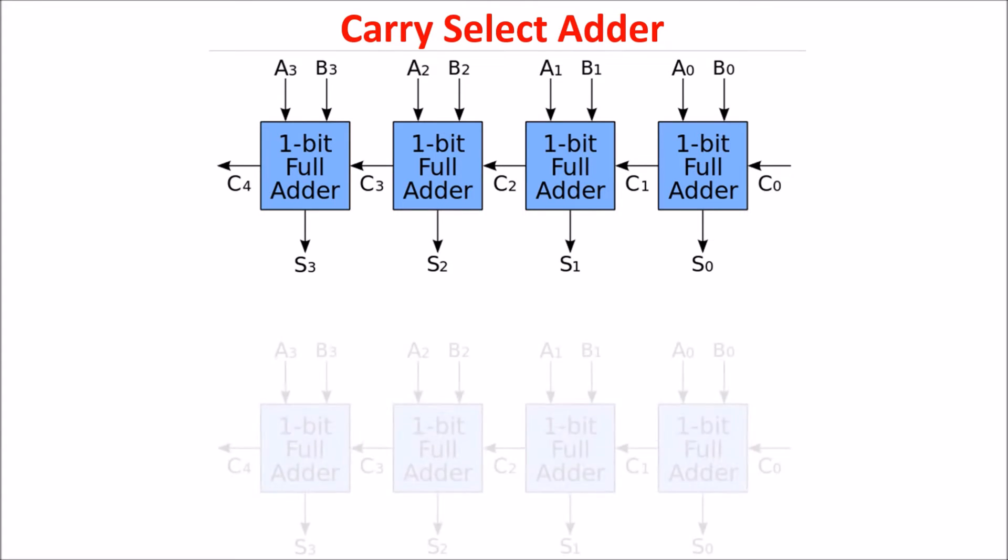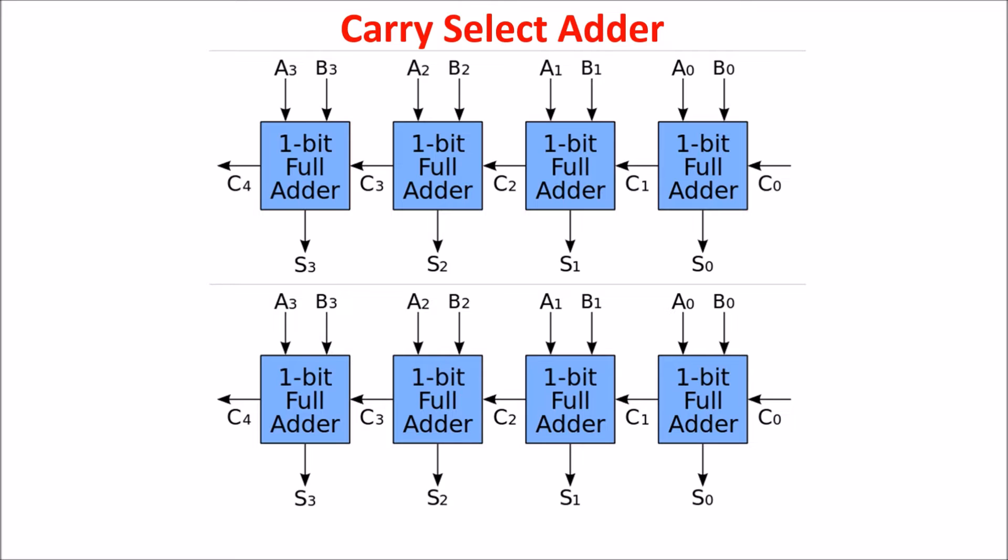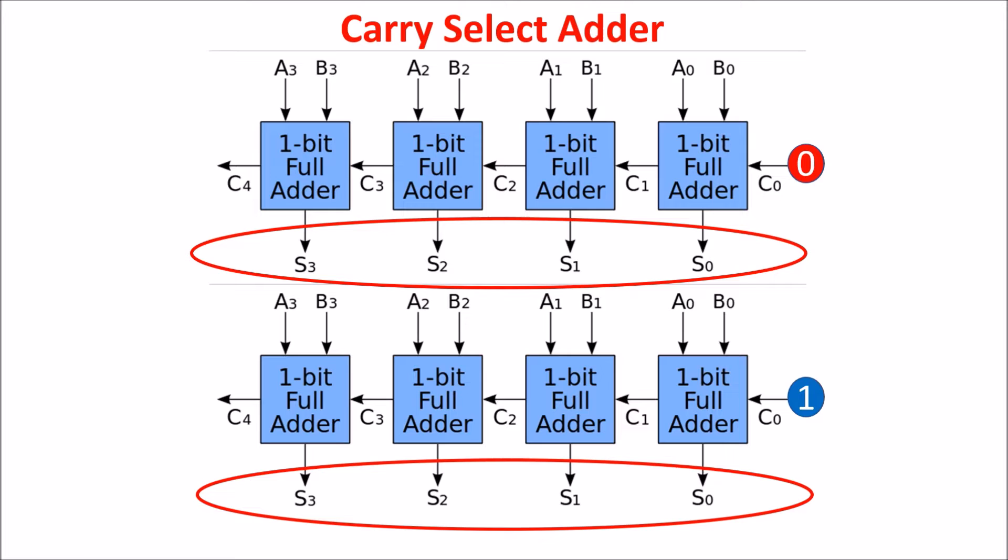The basic idea is to double the number of full adders, connecting the input carry in one case to zero and the other to one. This way we have two four-bit ripple carry adders, and here we have the sum if the carry-in is zero, and here the sum if the carry-in is one.